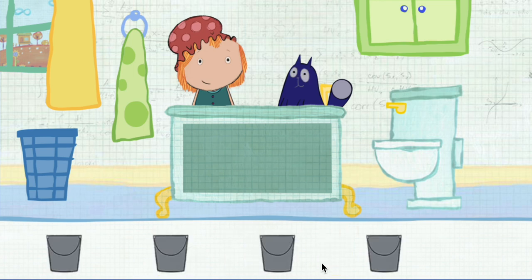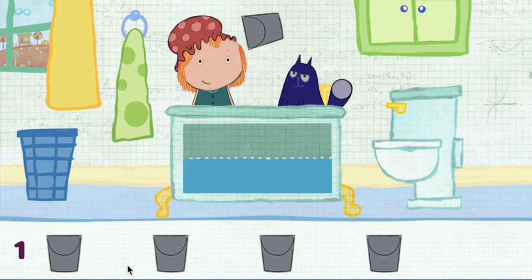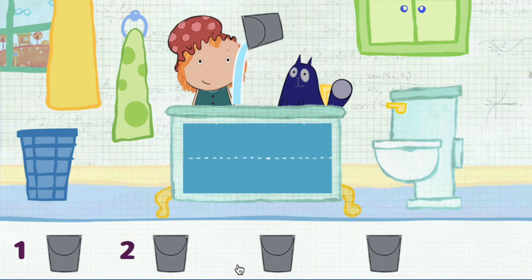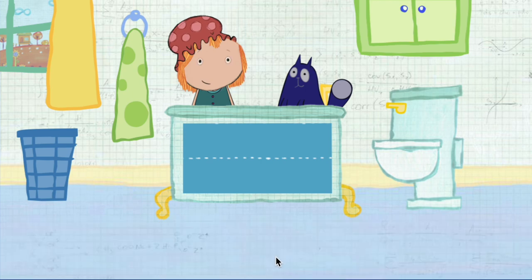Click on each container to pour it in. Let's add this one, and then go down the line. 1, 2. Looks like we have too many containers. All right! The tub is full!